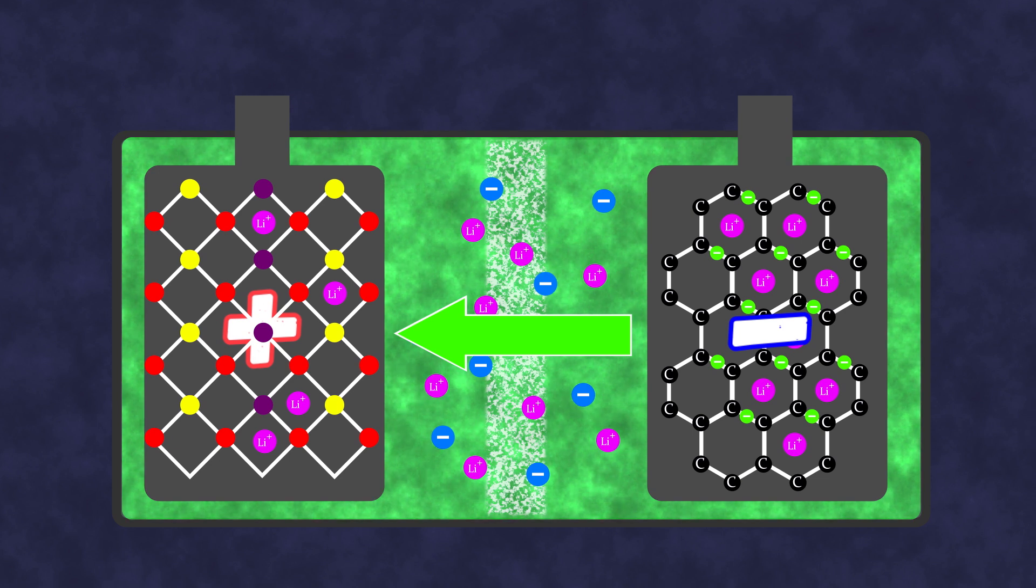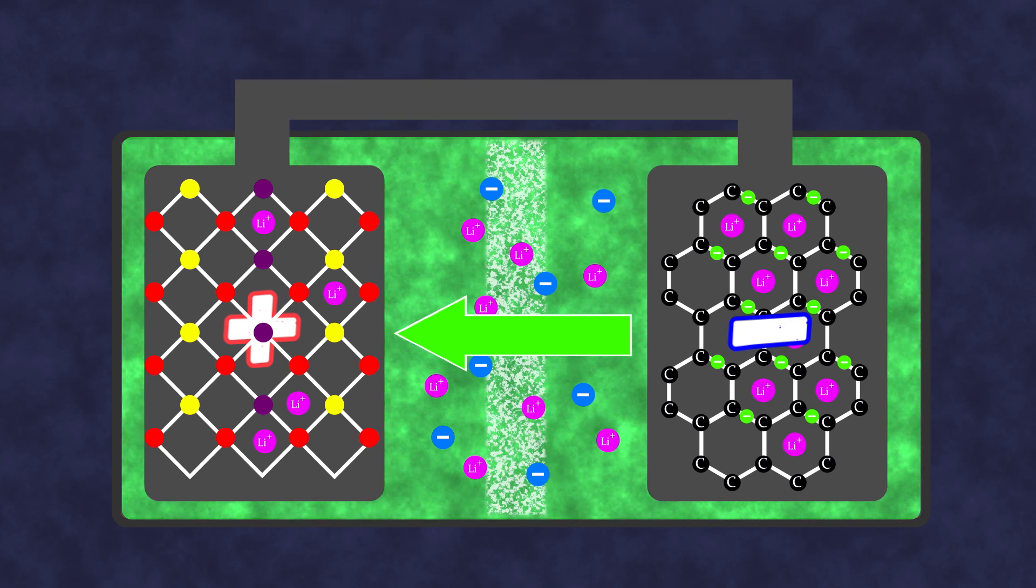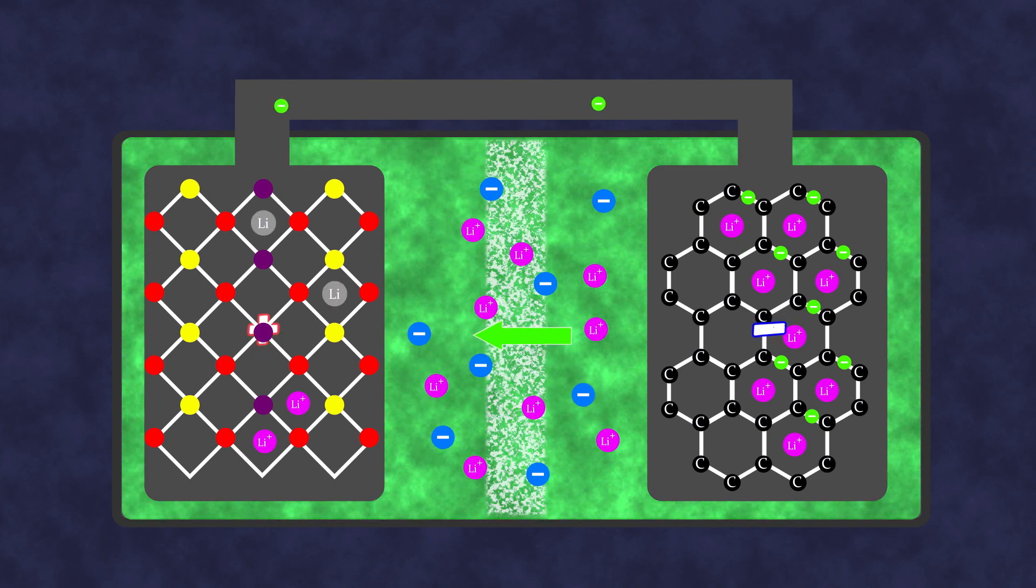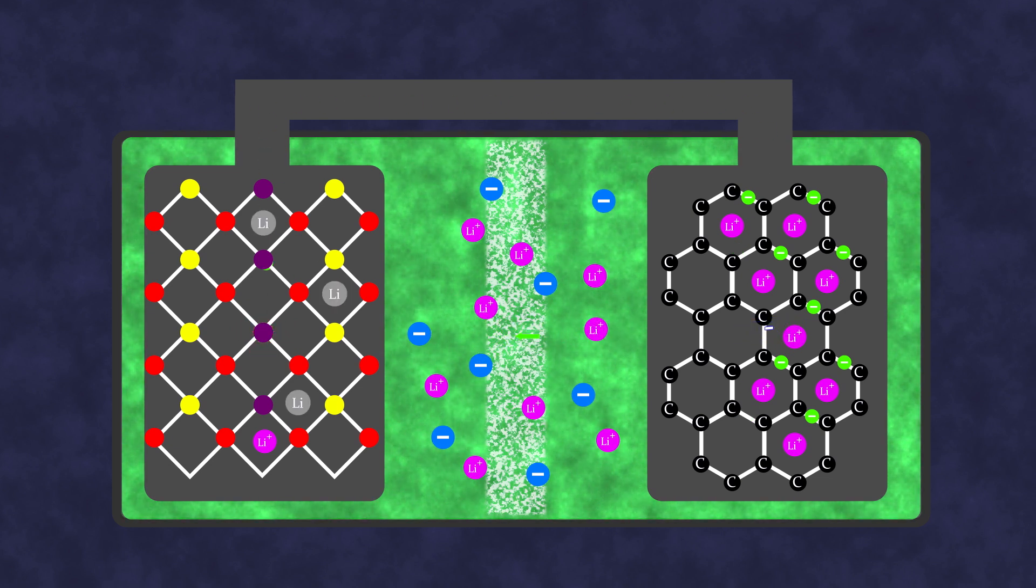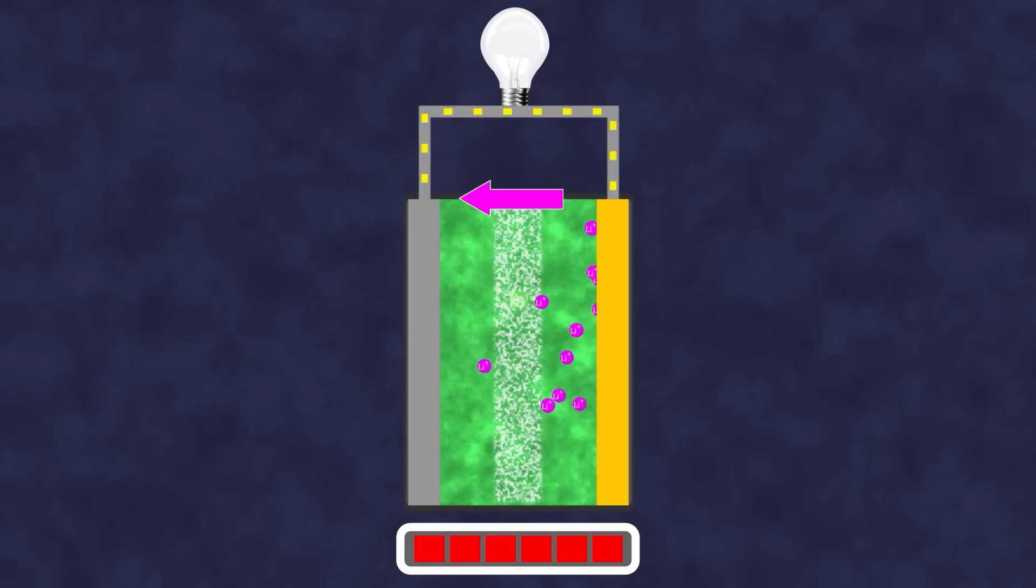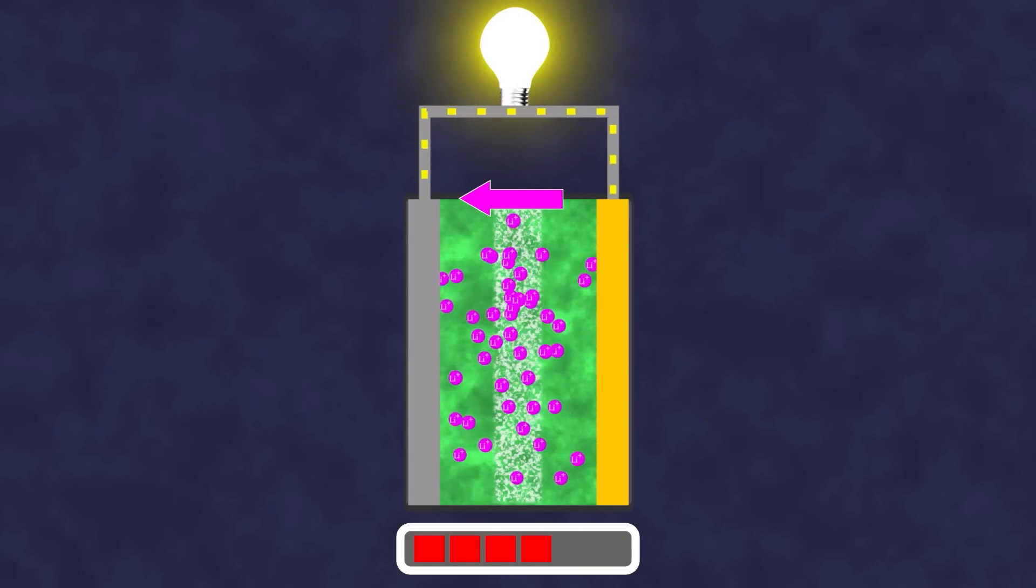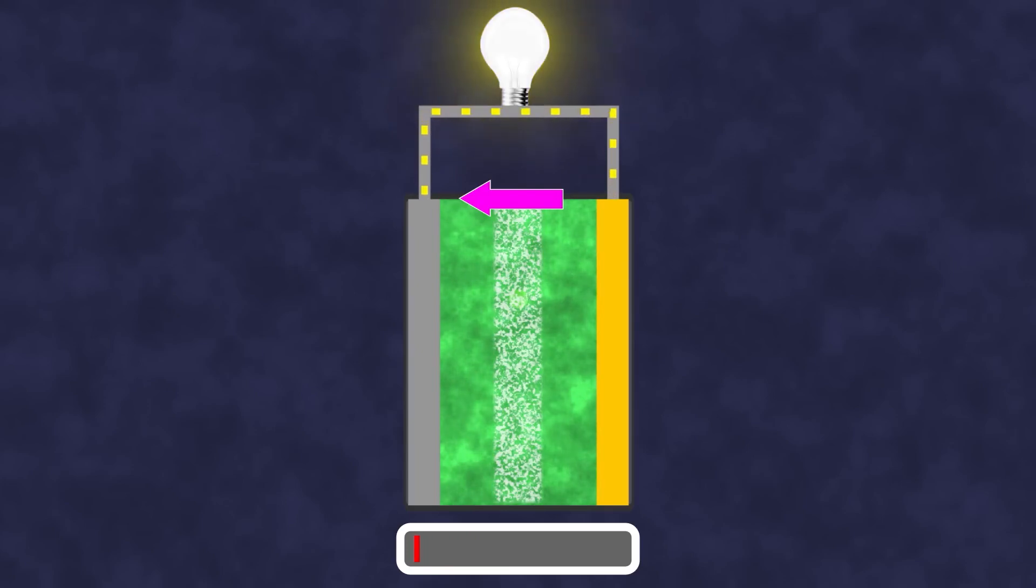However, electrons cannot travel directly through the electrolyte and are forced to move along a conductor connecting the cathode and anode. The flow of electrons through the conductor is the electric current, whose energy we use to power various devices. When all or almost all lithium ions and electrons migrate from the anode to the cathode, the current stops and we say the battery is discharged.